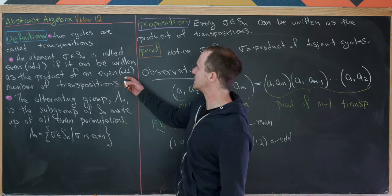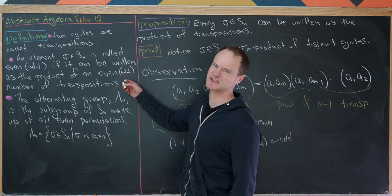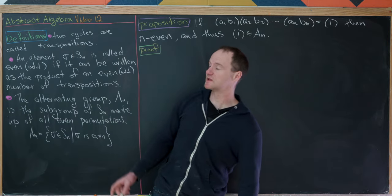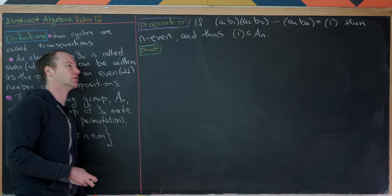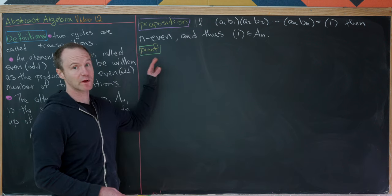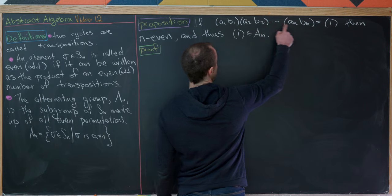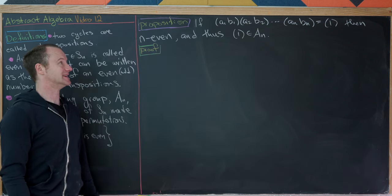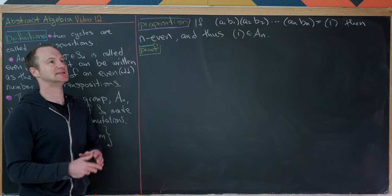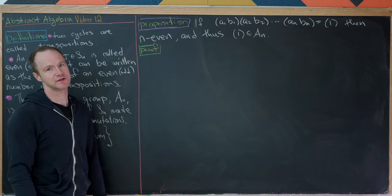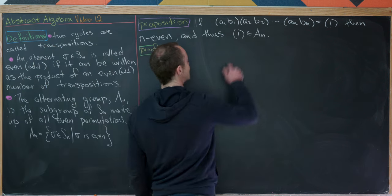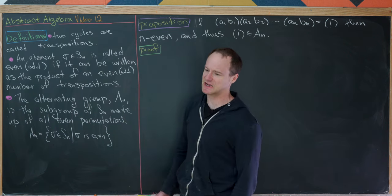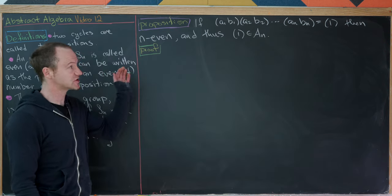Now we'll prove an important proposition: if we have a product of N transpositions equal to the identity, then N is even. That means the identity is an even element of Sn — an even permutation — and is therefore inside An, which is good since An is supposed to be a group and must contain the identity.